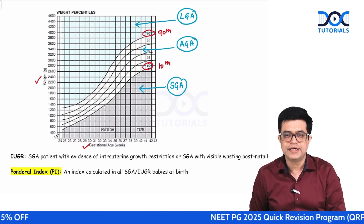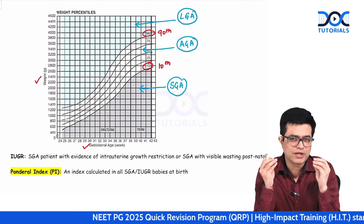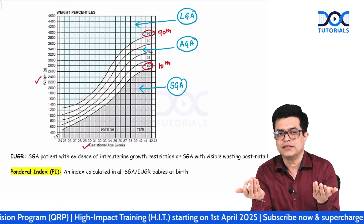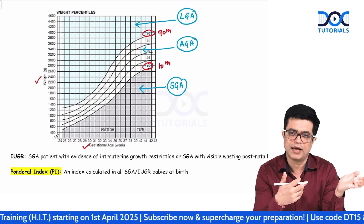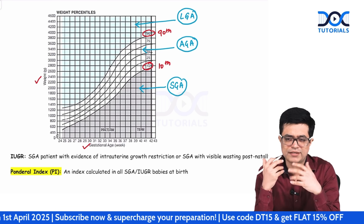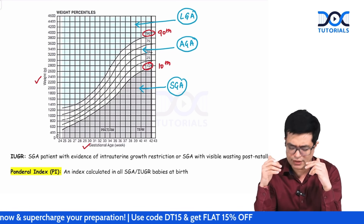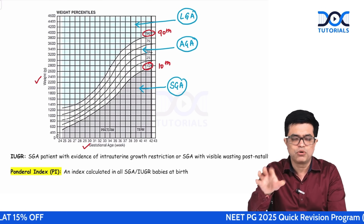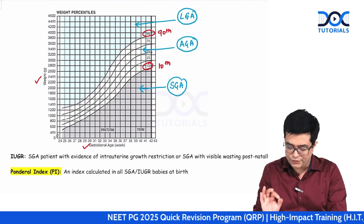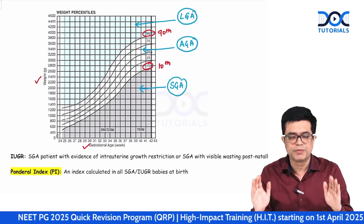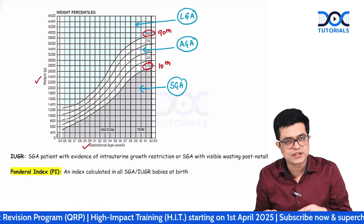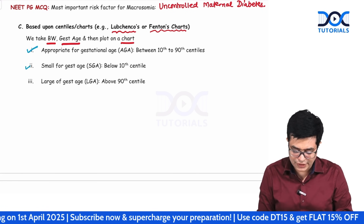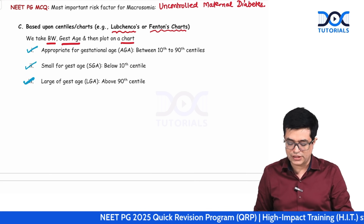The examiner can ask for definitions or give an image-based question, asking you to plot on the chart and state the diagnosis. AGA is between 10th to 90th centile, SGA is below 10th centile, and large for gestational age is above 90th centile. Always think about what the examiner can ask in each topic.